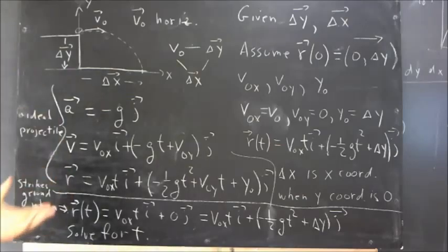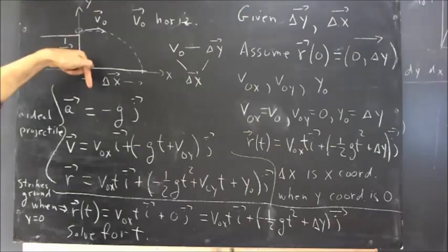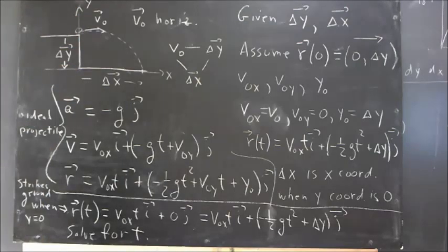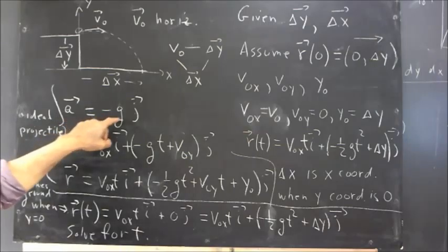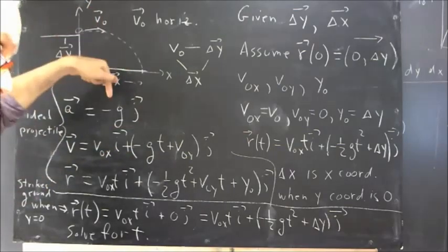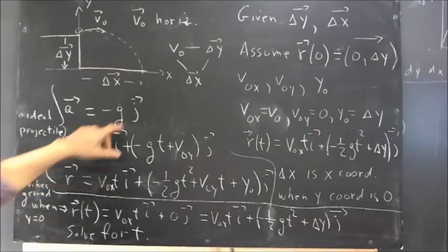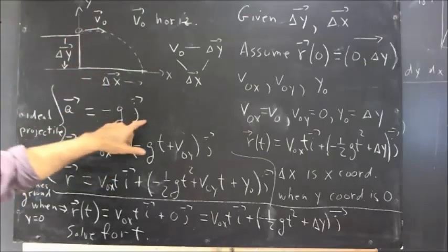Now, this is assuming an ideal projectile. The acceleration is always g in the downward direction. For any ideal projectile where we don't have any air resistance, the acceleration vector is just negative g j. The acceleration is always simply g in the negative y direction.